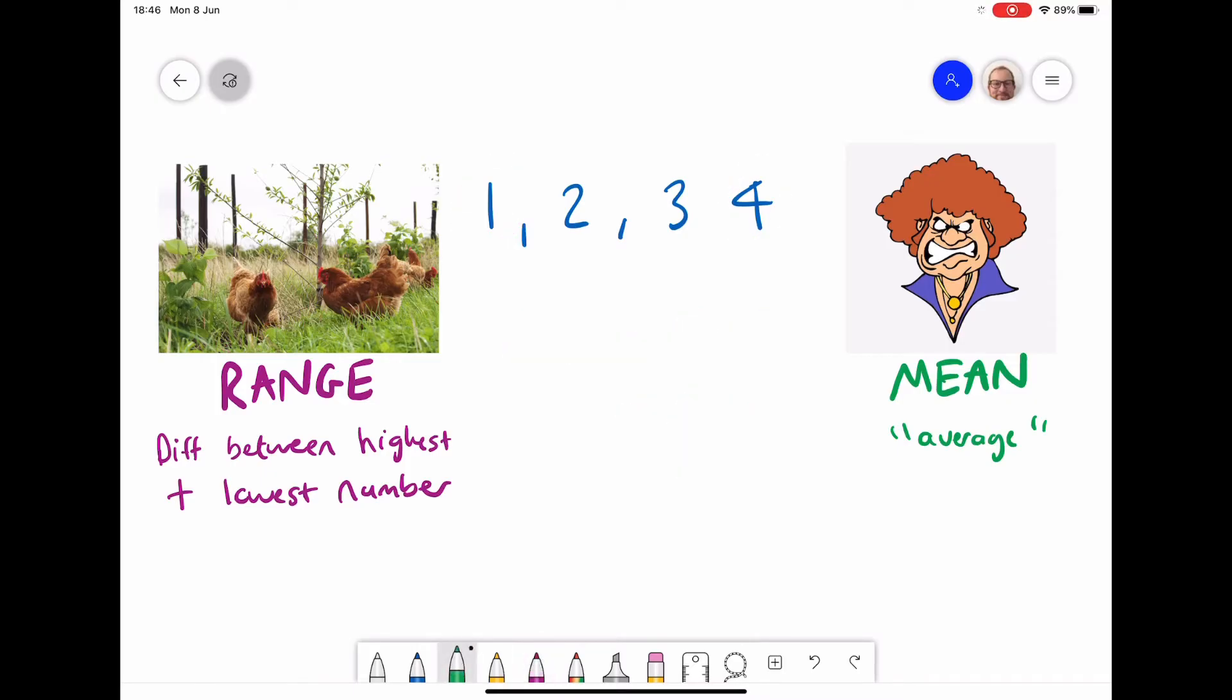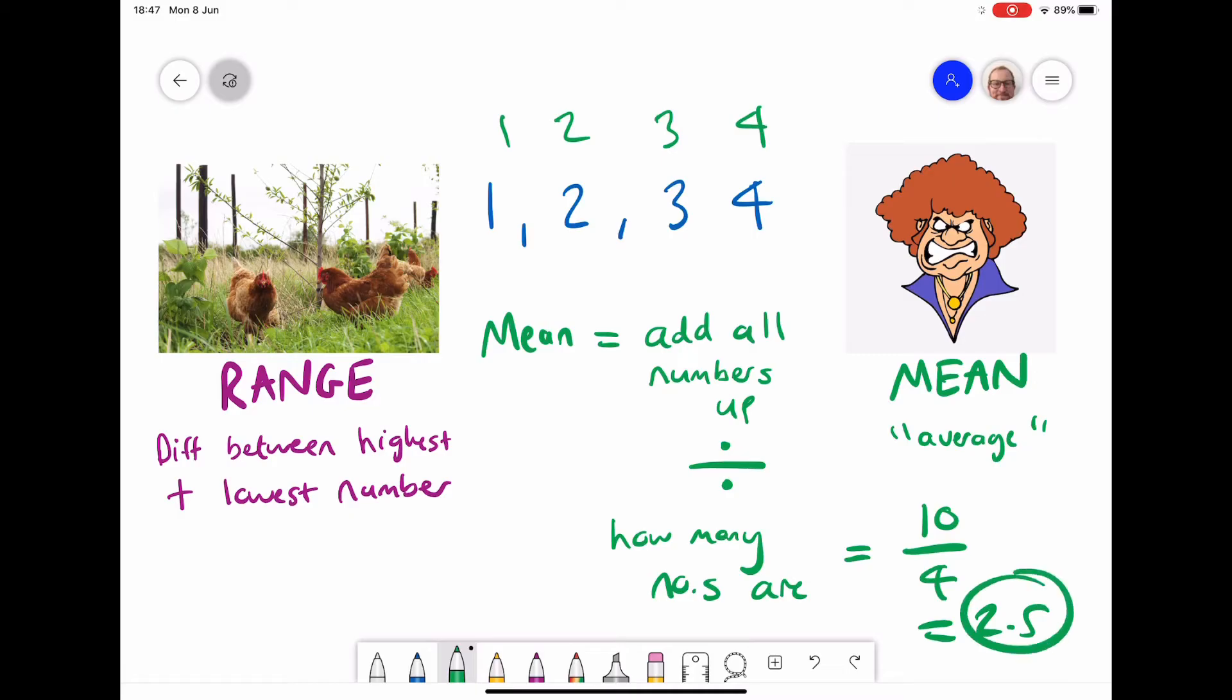To get the mean, you are simply adding up all the numbers in your data set and then dividing it by how many numbers you have. So if I add up all of these numbers, then I get ten. Four plus three plus two plus one is ten, and then divide it by how many there is, and there are four actual numbers, so divide it by four equals 2.5 for our mean.